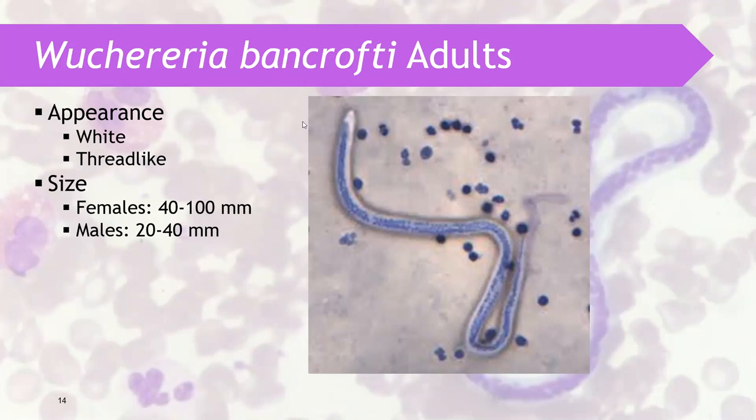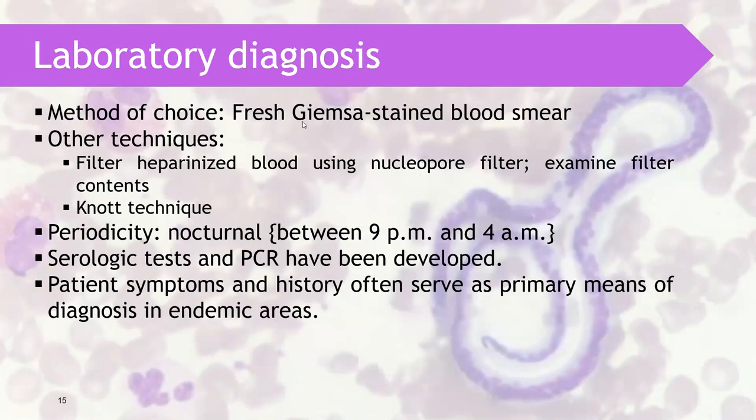Wuchereria bancrofti is usually seen in a Giemsa-stained peripheral blood smear. Other techniques include filtering heparinized blood using a Nuclepore filter to filter the microfilariae. Knott technique is also recommended. Take note that this is a nocturnal parasite; therefore, the appropriate time for collecting blood is usually between 9 PM to 4 AM. Serological tests and polymerase chain reactions have also been developed for detection.